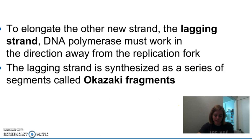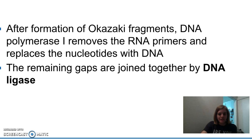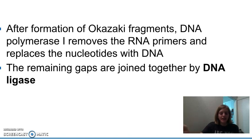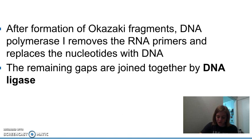You end up with a series of fragmented copied DNA. Once that's done, the Okazaki fragments are made, the leading strand is finished, and the Okazaki fragments are finished on the lagging strand. The DNA polymerase removes the RNA primers and replaces those leftover nucleotides with DNA. Then finally, the remaining gaps are joined together by an enzyme known as DNA ligase, which joins the phosphate backbones of all the Okazaki fragments into a single continuous DNA strand.